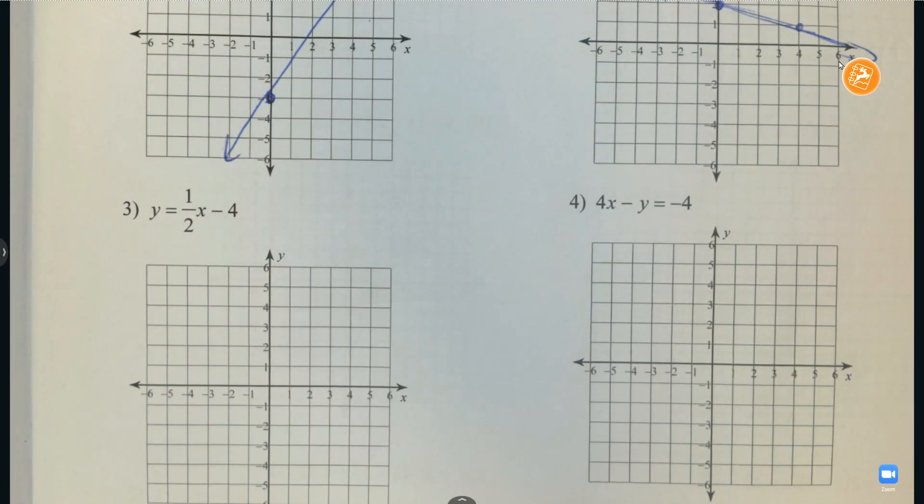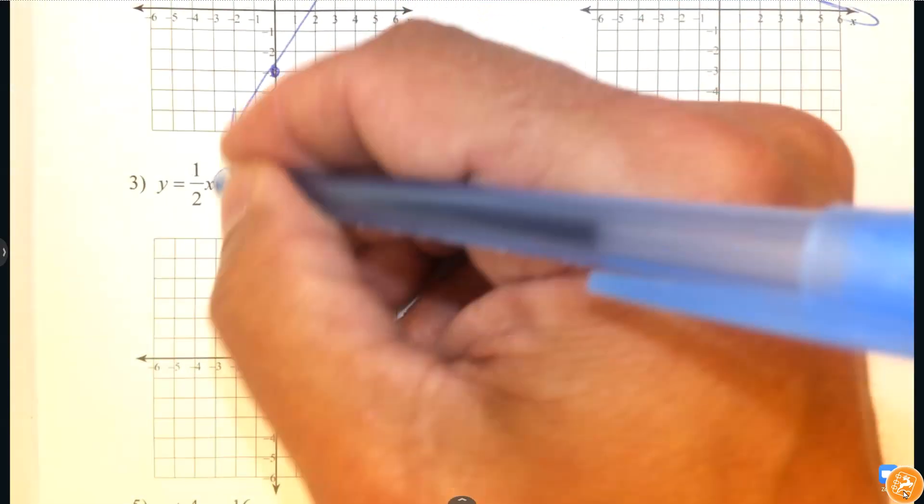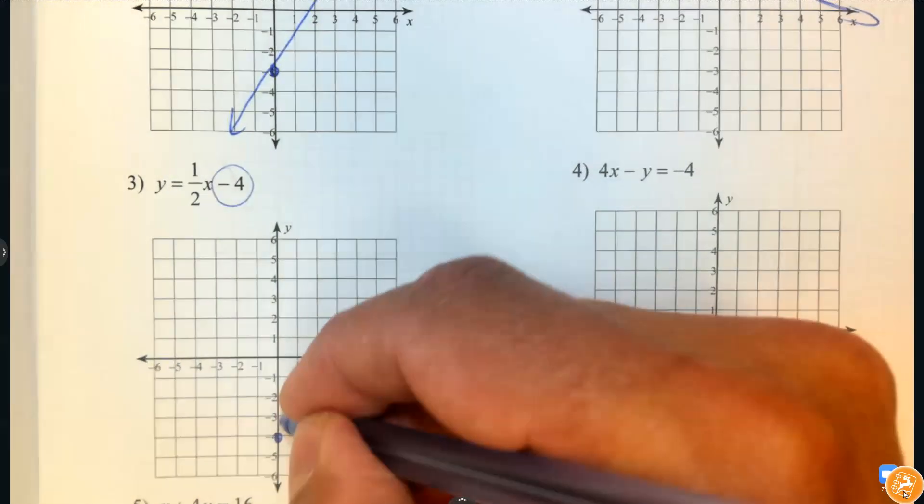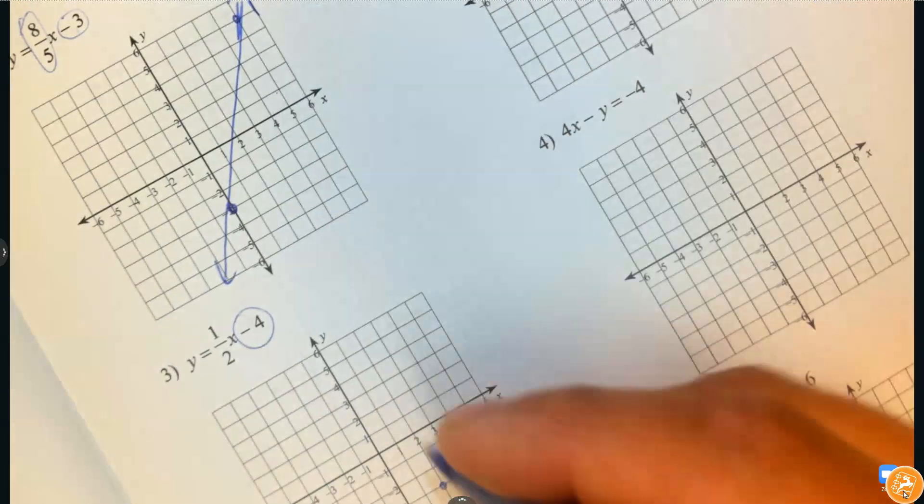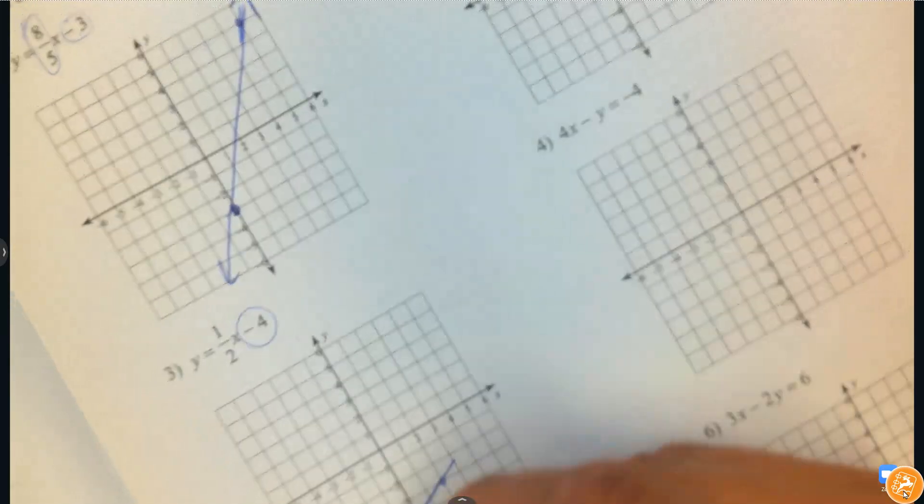Again, slope-intercept form. So we're going to start at negative 4. We're going to rise up 1 and over 2, and then draw our line. All good, right?